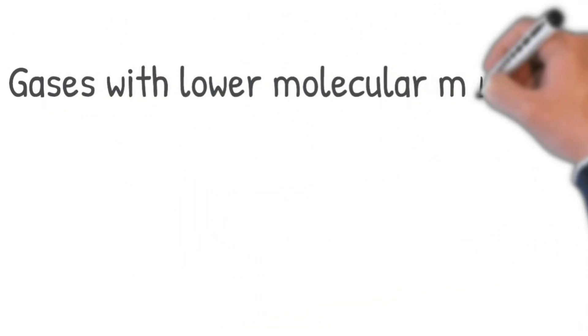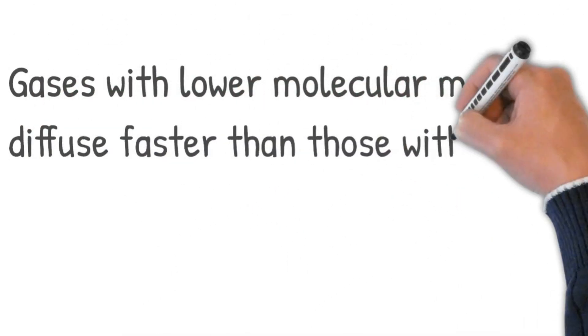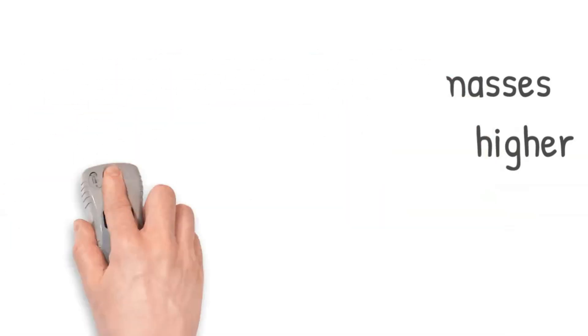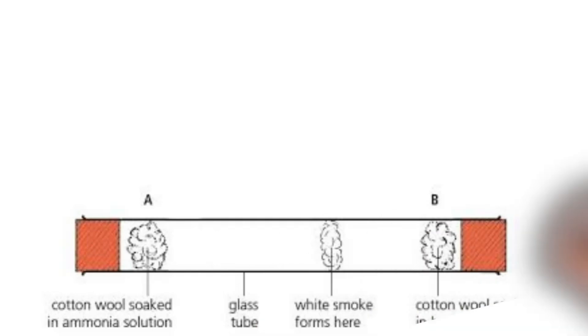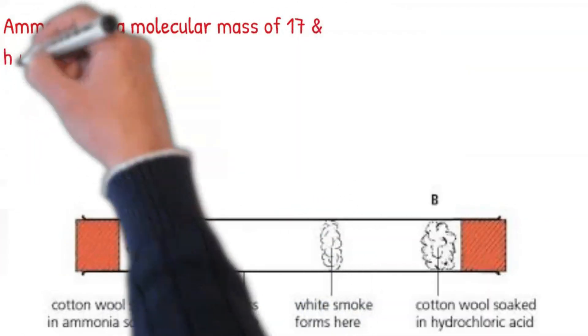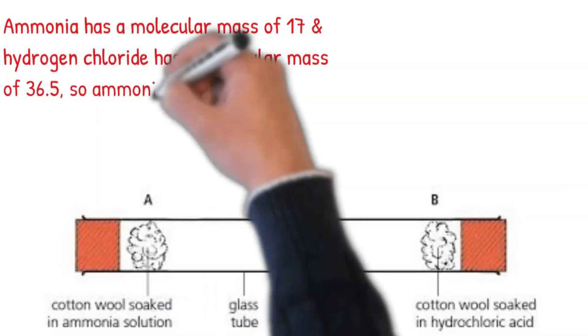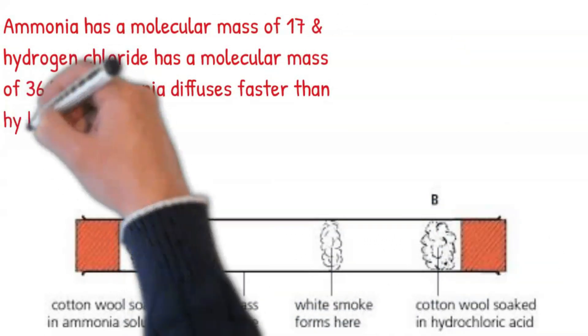Gases with lower molecular masses diffuse faster than those with higher molecular masses. Ammonia has a molecular mass of 17 and hydrogen chloride has a molecular mass of 36.5, so ammonia diffuses faster than hydrogen chloride.